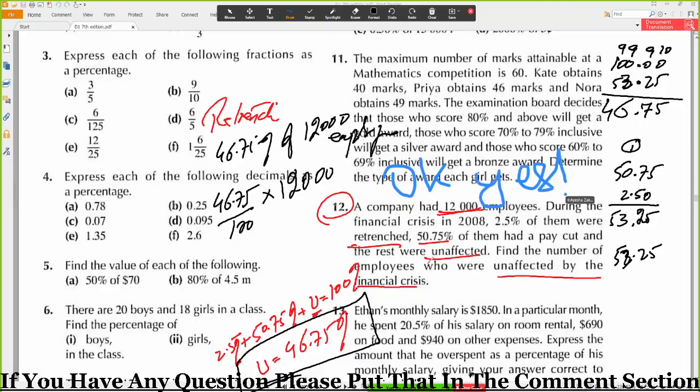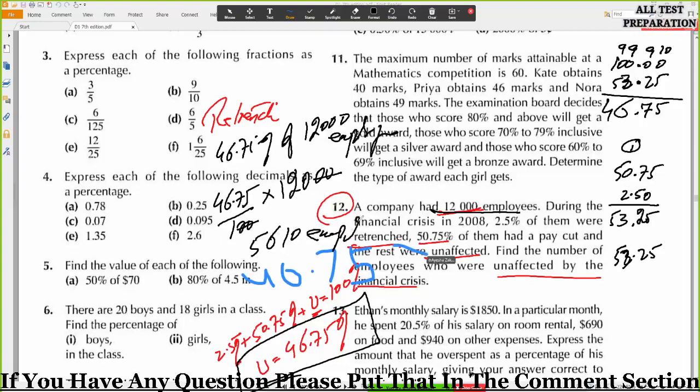You will need to, now you will need to find the 46.75 percent of 12,000. So here is what is 46.75 divided by 100 times 12,000. So these two zeros will cancel by these two zeros. So 120 times 46.75, that is equal to 5,610 employees who are unaffected, okay.